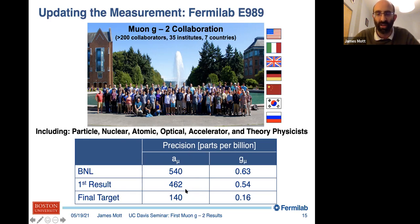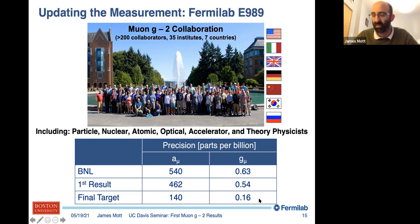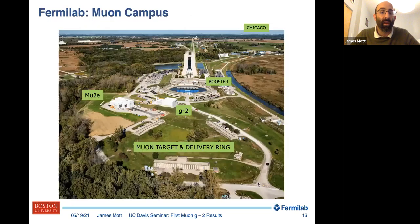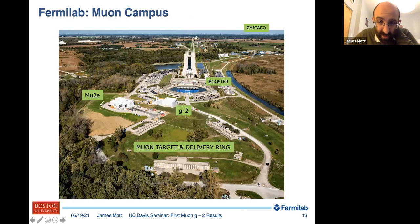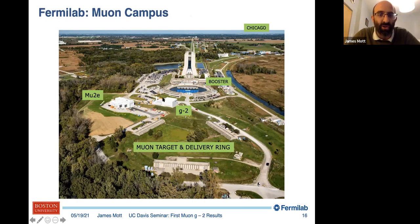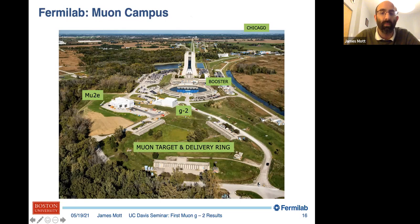The experiment is here at Fermilab. For those familiar with Fermilab, here's the high-rise and canteen. We've got a good spot in the G-2 building on the Muon campus, not too far from the lunch hall. This is the old anti-proton ring which is now our muon target and delivery ring, with Mu2E nearby and Chicago in the distance.